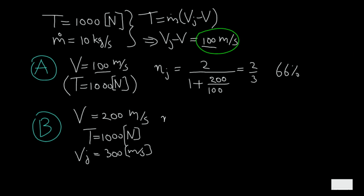So if we once again calculate propulsive efficiency, then we find that that is 2 divided by 1 plus 300 divided by 200. And if you figure out what the propulsive efficiency is, then we find that is about 0.8, which is 80%.